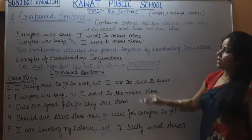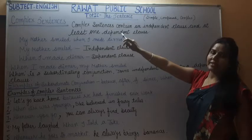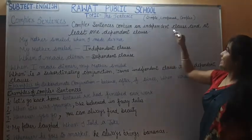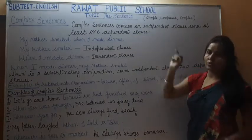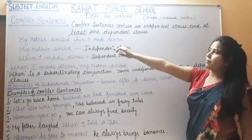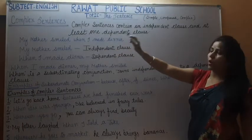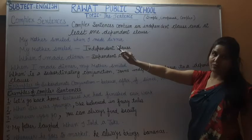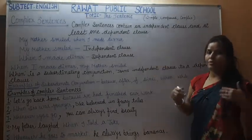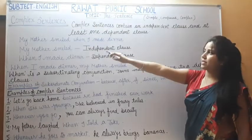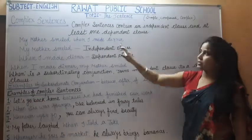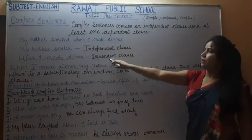I hope you have now understood all examples of compound sentences. The third kind of sentence is the complex sentence. Complex sentences contain an independent clause and at least one dependent clause. For example: 'My mother smiled when I made dinner.' Here 'my mother smiled' is the independent clause and 'when I made dinner' is the dependent clause.